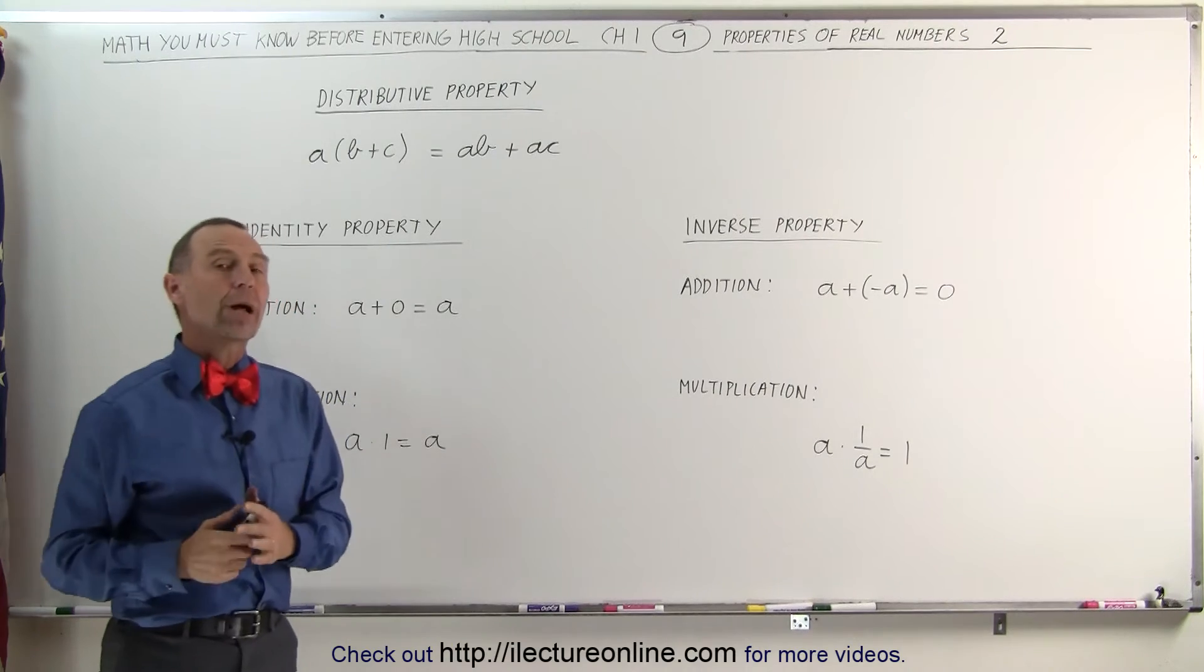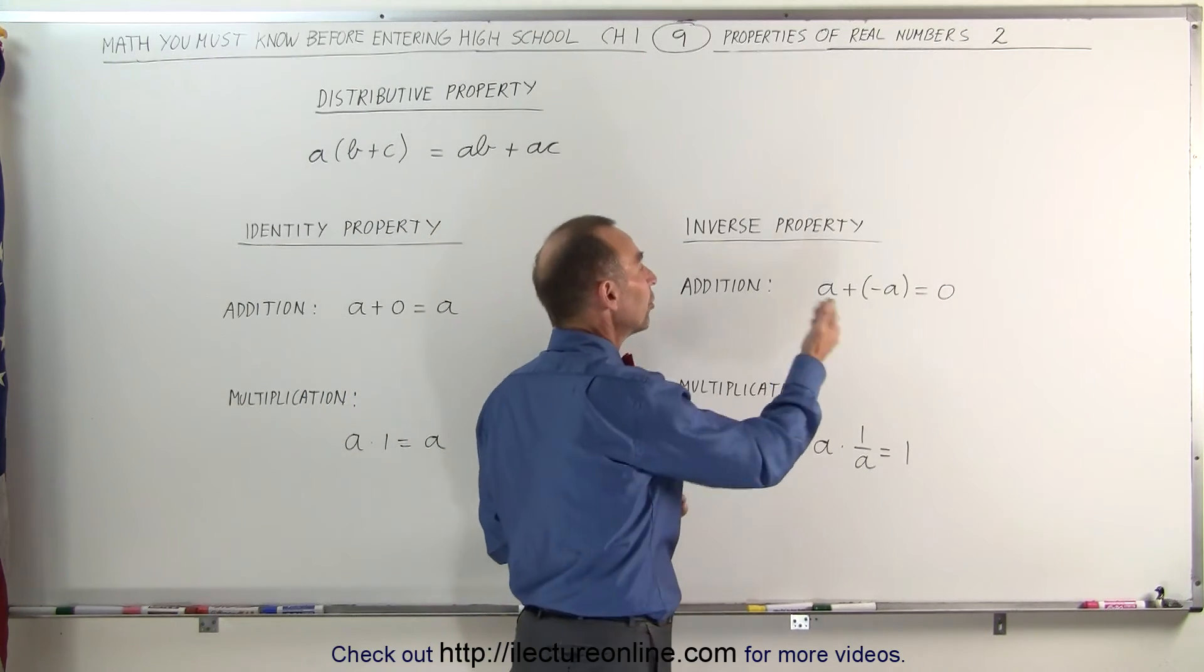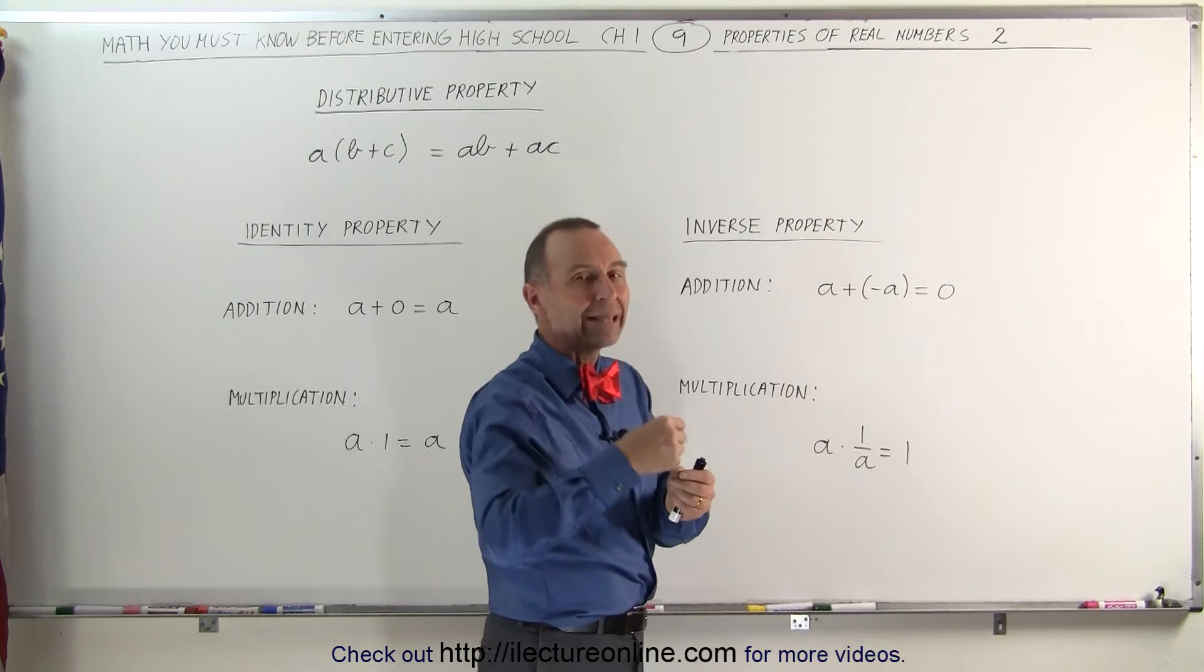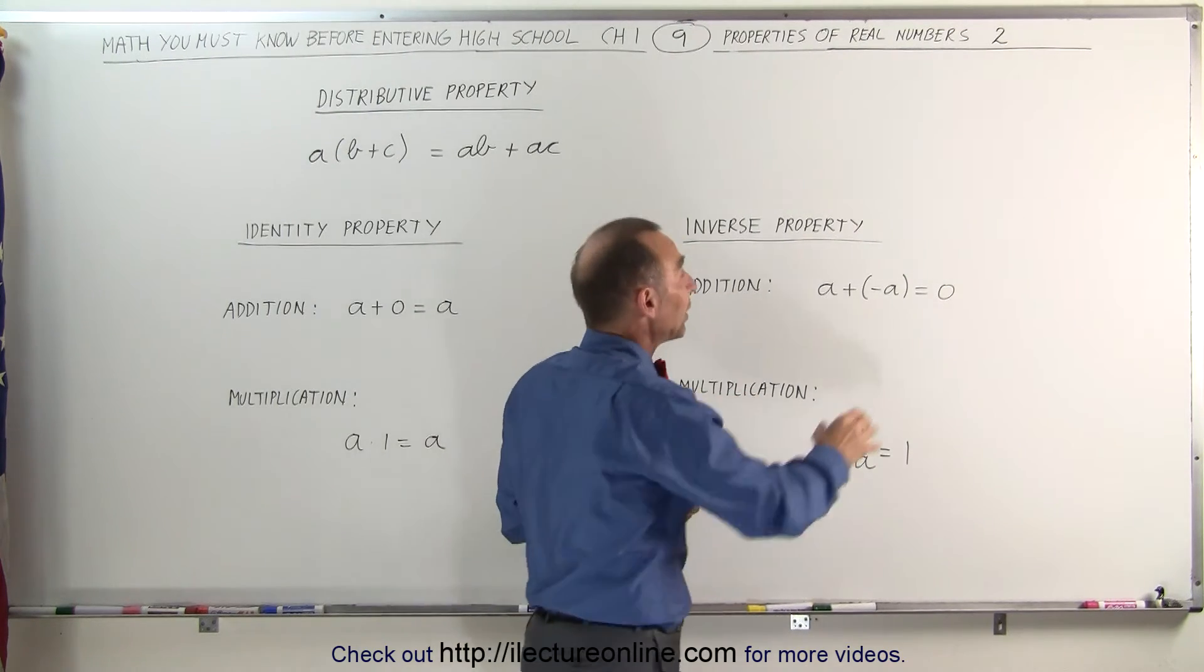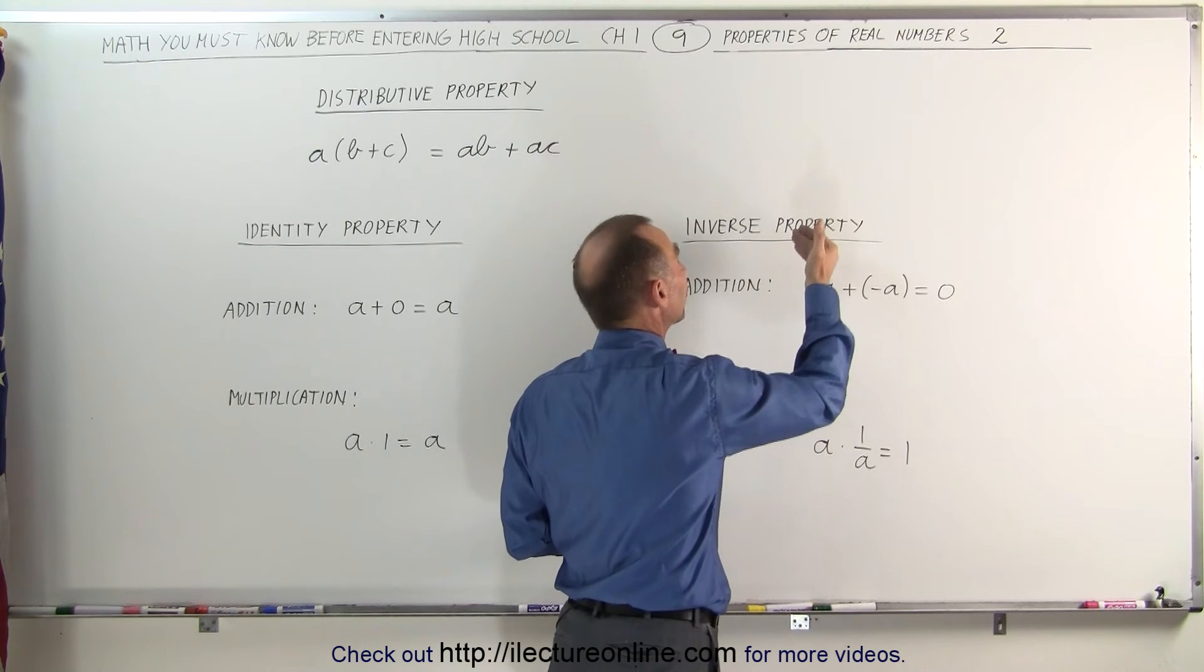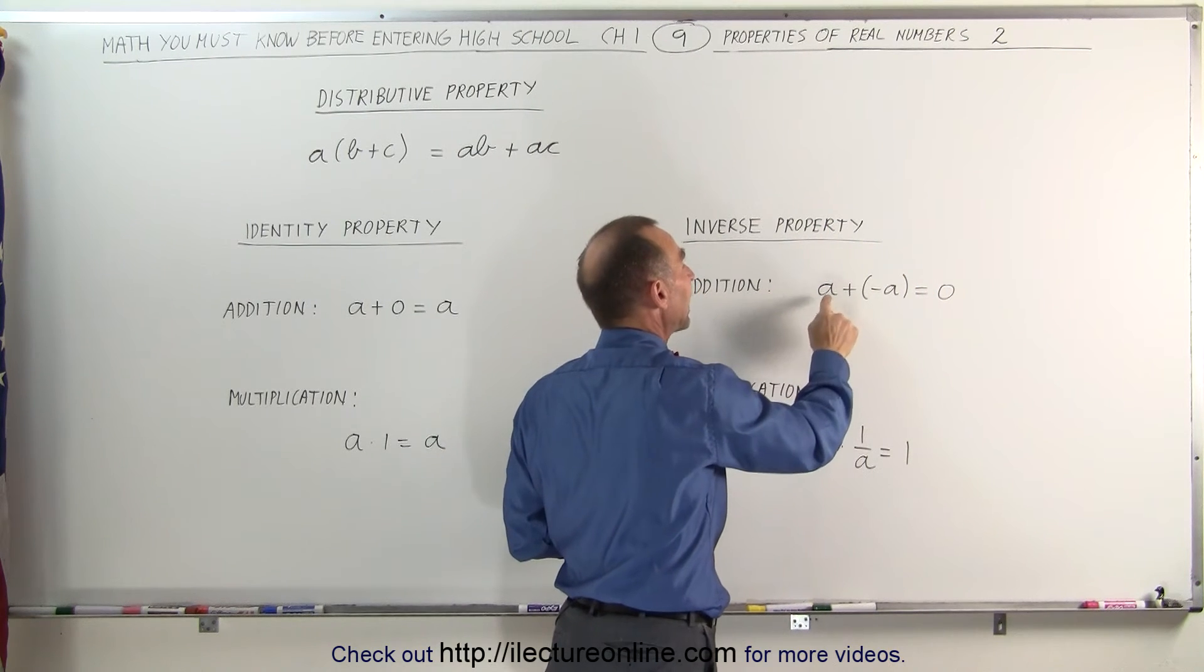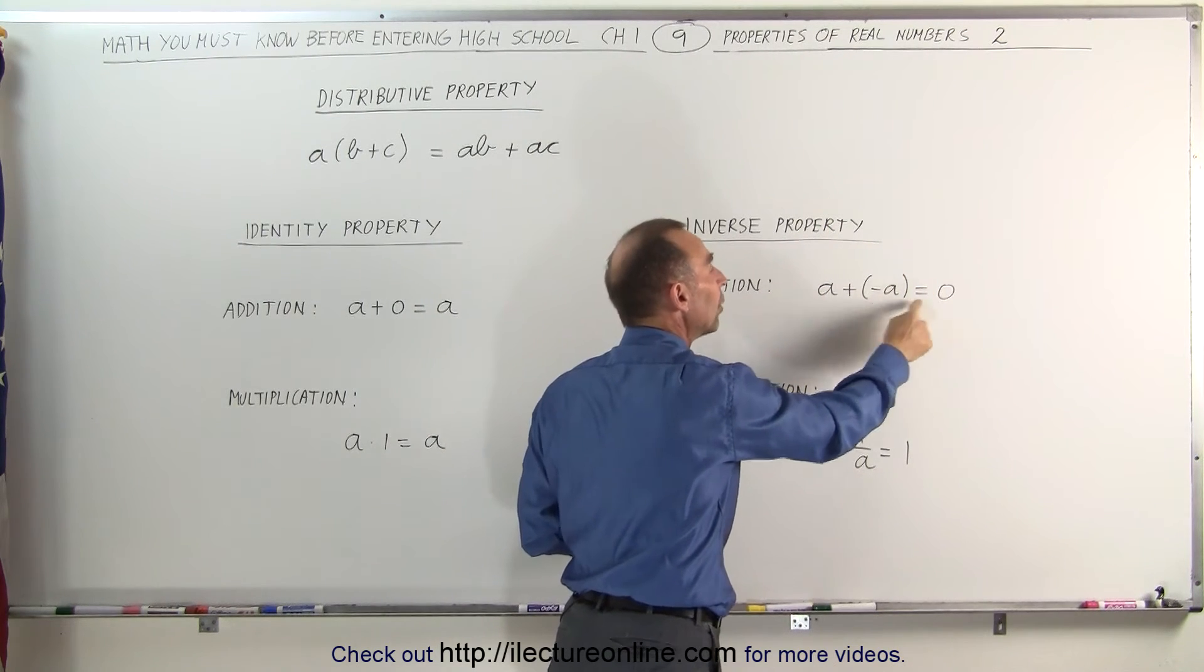The inverse property means that if we add a number to another number and we get 0, we add the inverse to the original number or the opposite in this case. This is called the inverse property for addition. If we take A and add negative A to that, we get 0.